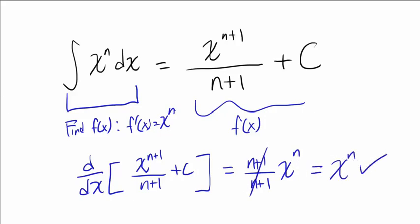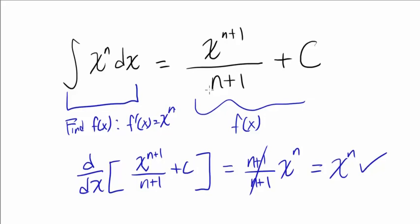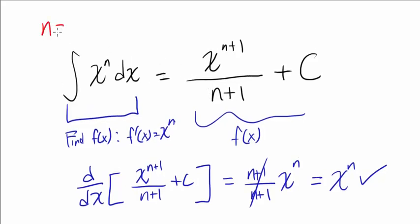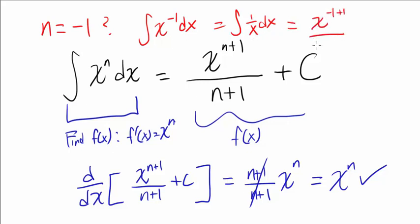But you may ask me, what happens when n is equal to negative 1? What does happen? You have the integral of x to the negative 1 dx, which is the integral of 1 over x dx. These two are the same thing: 1 over x and x to the negative 1. You get x to the negative 1 plus 1 over negative 1 plus 1 plus c, or x to the 0 over 0 plus c. You are dividing by 0—that's undefined.